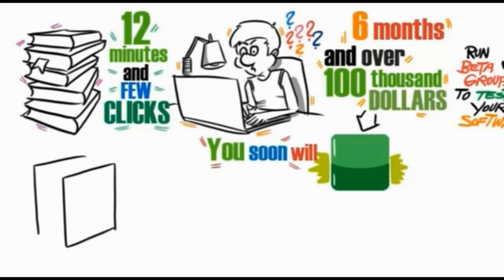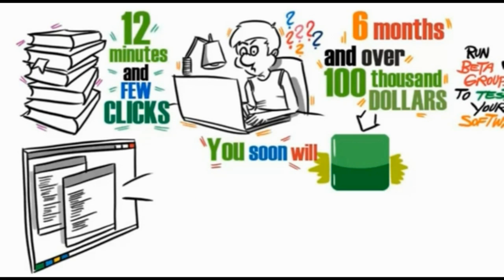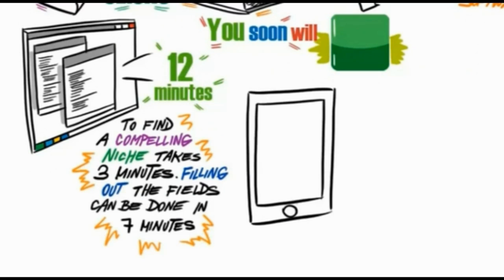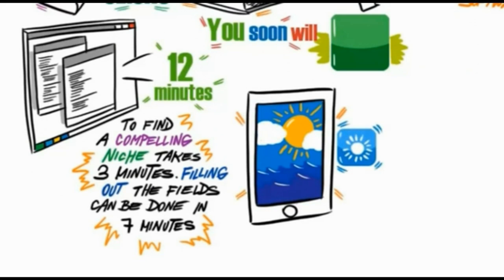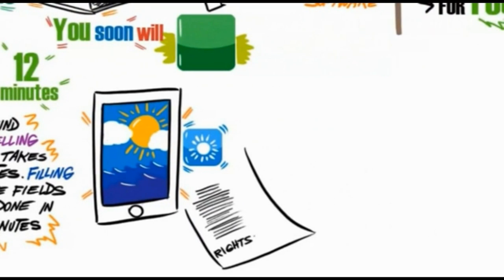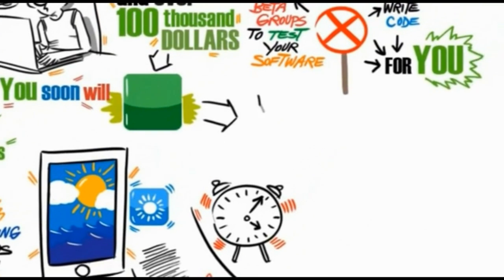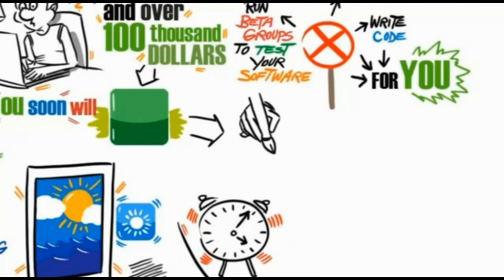Even if you don't fully understand what's involved in building an app, you soon will. You simply check a few boxes. Even most of the boxes are pre-filled and your app is magically created for you in 12 minutes. To find a compelling niche takes three minutes. Filling out the fields can be done in seven by selecting which modules you want to introduce on your new app. And of course, you're going to want a nice cover photograph and icon. Finding one of these on the internet that you have the rights to use can take two minutes and then presto you're done. Of course, you can take longer if you like. But if we are talking about efficiency, then this is your target number.